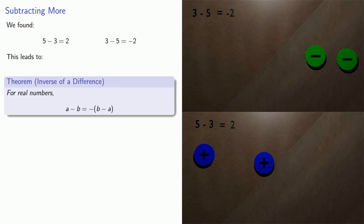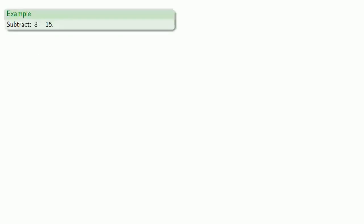For real numbers, a minus b is the same as the additive inverse of b minus a. So if I want to find 8 minus 15, the way we might approach it is this. I don't know what 8 minus 15 is. You can't subtract a larger number from a smaller number.